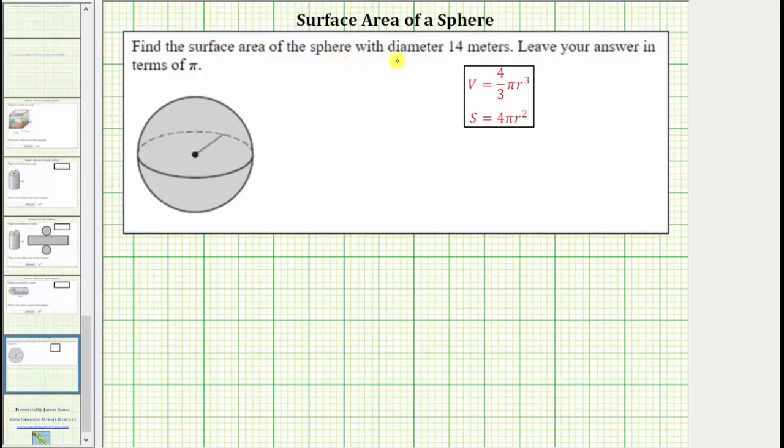We're asked to find the surface area of the sphere with diameter of 14 meters. We're told to leave the answer in terms of pi.